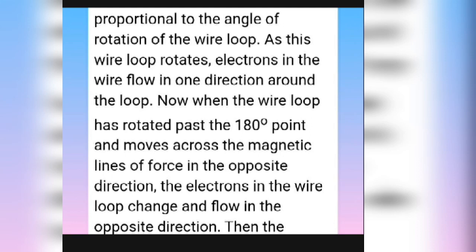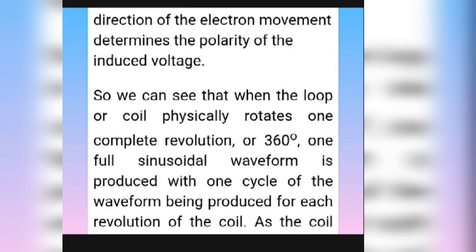As the wire loop rotates, the electrons in the wire flow in one direction around the loop. When the wire loop is rotated past the 180-degree point and moves across the magnetic lines of force in the opposite direction, the electrons in the wire loop change and flow in the opposite direction. The direction of electron movement determines the polarity of the induced voltage. So, when a loop of coil physically rotates one complete revolution at 360 degrees, a full sinusoidal waveform is produced, with one cycle of the waveform being produced for each revolution of the coil.